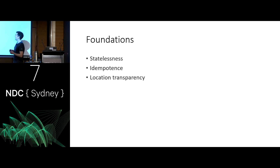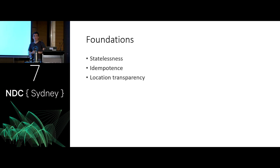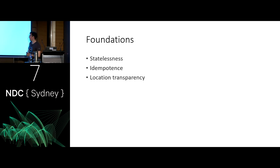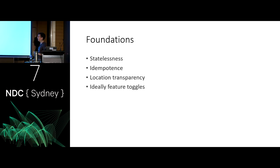A number of the patterns I'm going to go through depend on three principles: statelessness, idempotence — the ability to make the same request multiple times and receive the same result, often implemented by including some kind of ID in the request — and location transparency. If you're tying requests to a specific IP address or hard-coding something, it's going to be harder to modify later, rather than using a DNS-based solution. I'd also add feature toggles: being able to turn off a new feature you've introduced is certainly a good thing.